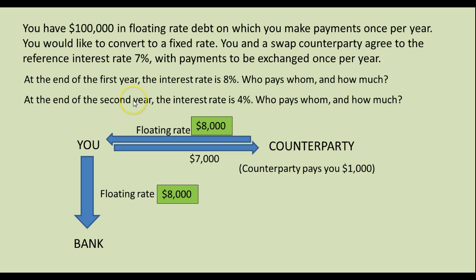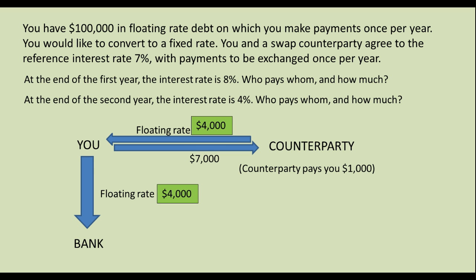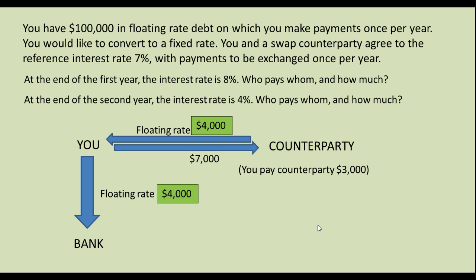A second question: at the end of the second year the interest rate is 4% — who pays whom and how much? Well at 4%, the floating rate no longer requires an $8,000 payment; it requires a $4,000 payment. With you always paying the counterparty $7,000, in this case the counterparty is giving you back $4,000. The net effect is that you pay the counterparty $3,000. In total, you pay the bank $4,000, you pay the counterparty $3,000, and your total payment is $7,000.